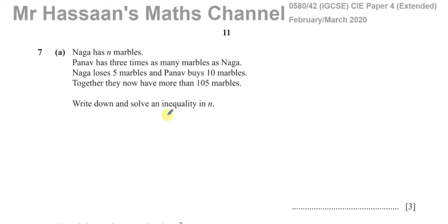So it says Naga, I don't know how to pronounce it, has N marbles. Panav has three times as many marbles as Naga. Naga loses five marbles and Panav buys ten marbles. Together they now have more than 105 marbles. Write down and solve an inequality in N.